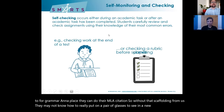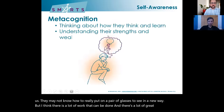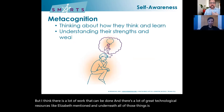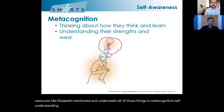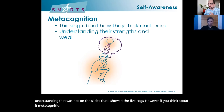There are a lot of great technological resources, as Elizabeth mentioned. And underneath all of those things is metacognition — self-understanding. Metacognition was not on the five cogs slide, but if you think about it, metacognition is really at the heart of executive function.